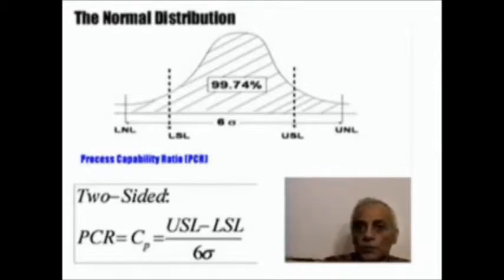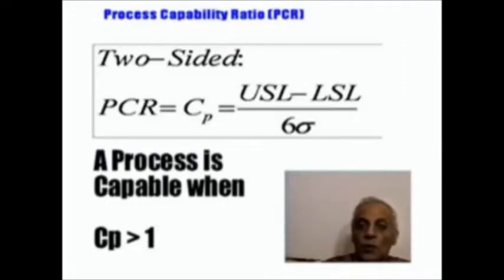If you recall, with the design capability ratio, a design capability ratio or design capability index of greater than 1 was good. A process capability ratio of greater than 1 is also good, as you can see here.